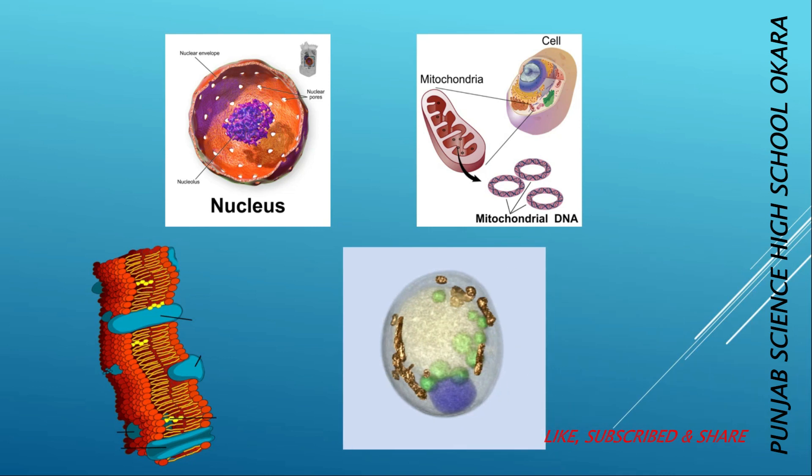Vacuoles store waste materials, water, air, and food particles. In plant cells, a single large vacuole is present, but in animal cells many small vacuoles are present. Thank you.